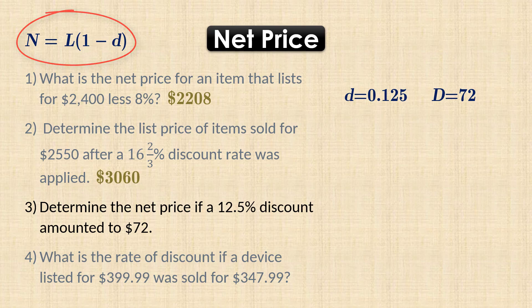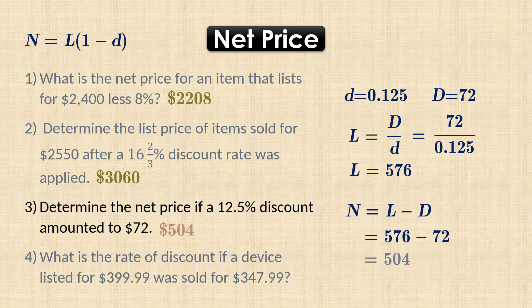We can, however, find the list price using the relationship we derived earlier. That is, the list price equals the amount of discount divided by the rate of discount. So the list price equals 72 over 0.125 which gives 576. We can then find the net price by simply subtracting the amount of discount from the list price and that gives 504.